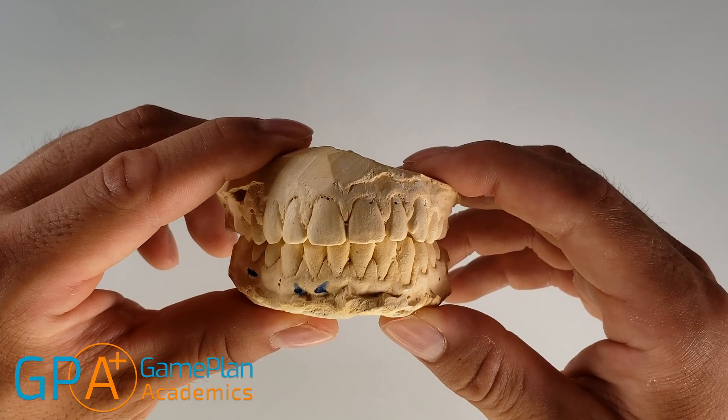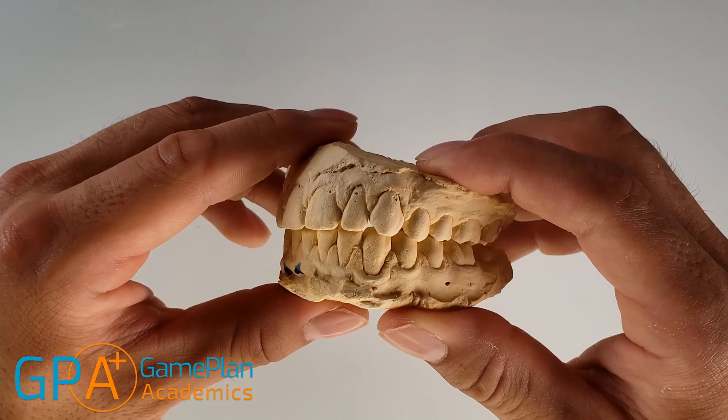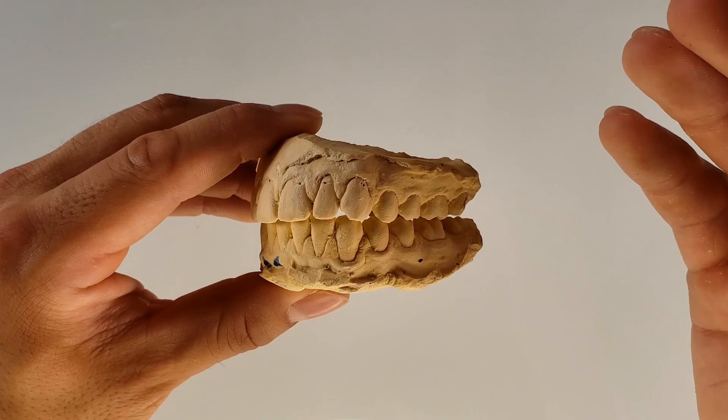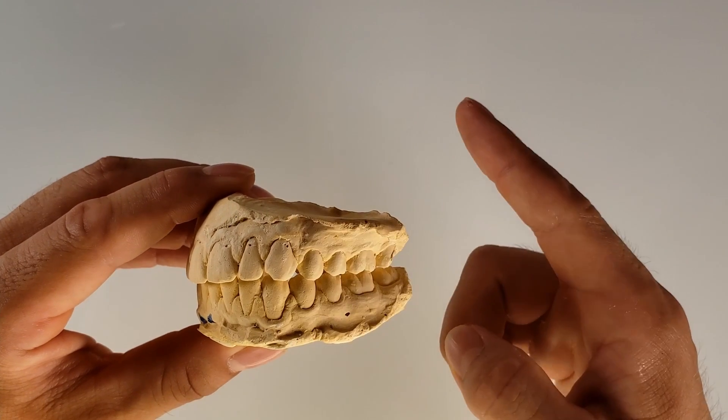All right, so let's talk about the planes of the interior teeth. Now, all we really need to worry about is the canines because you can only have planes if you have ridges. Let's talk about it.